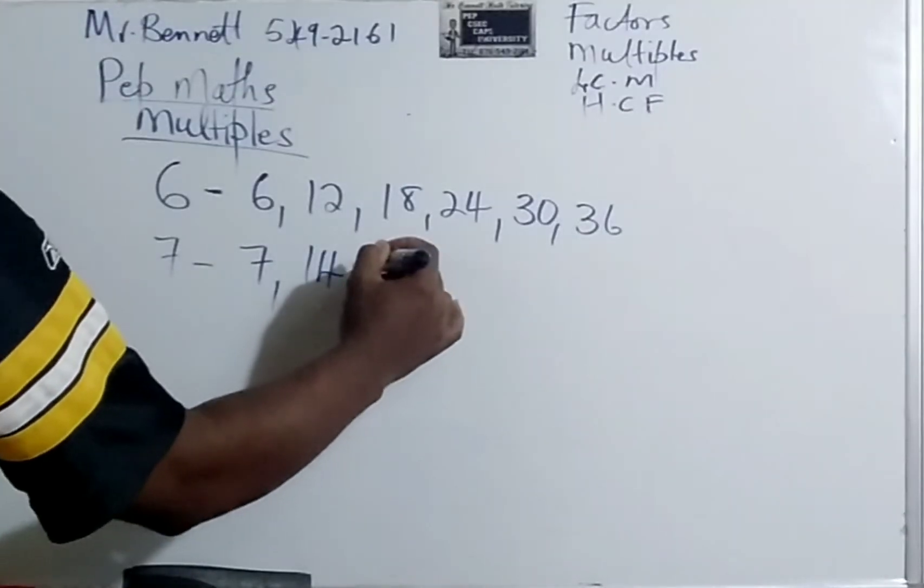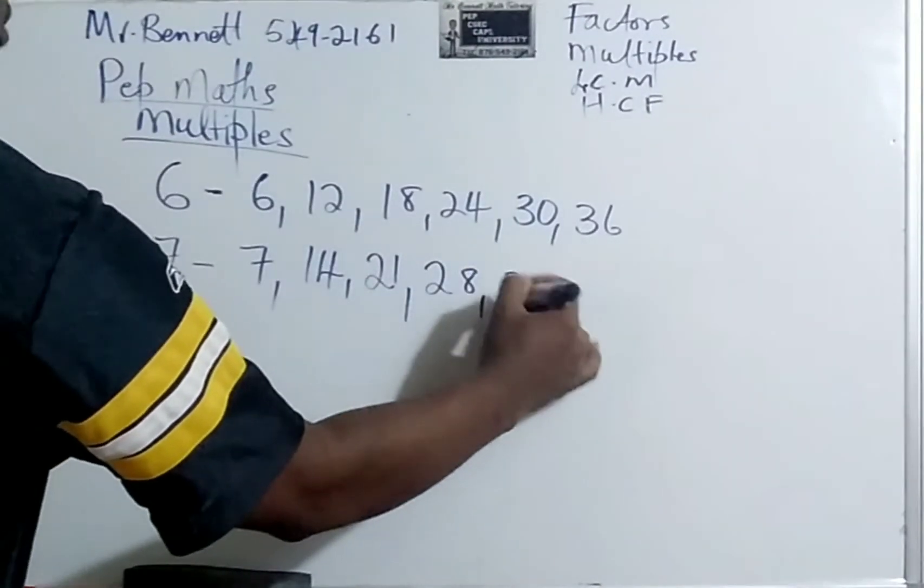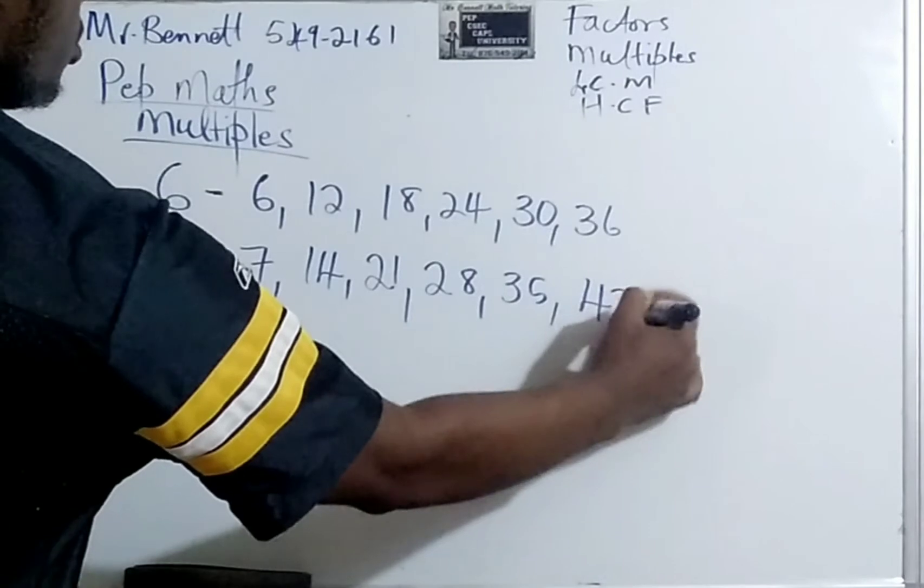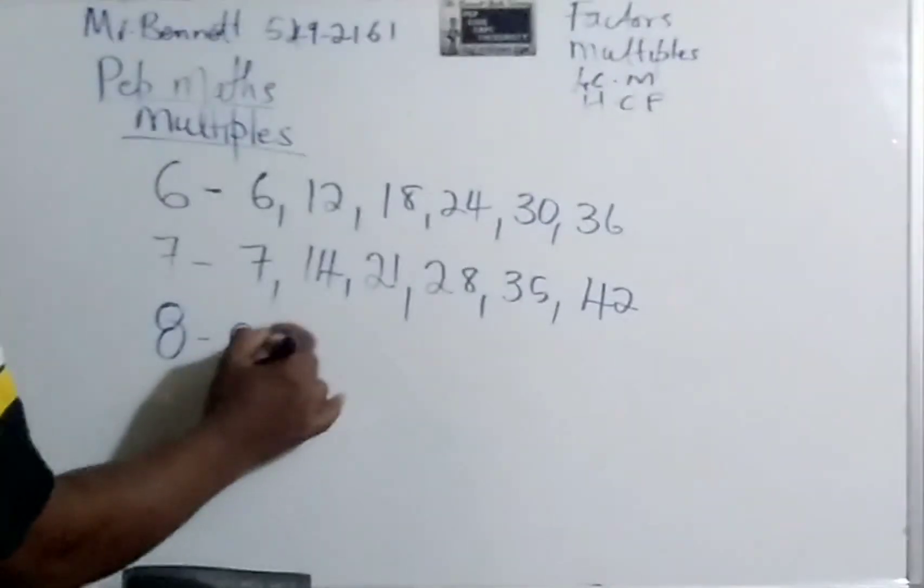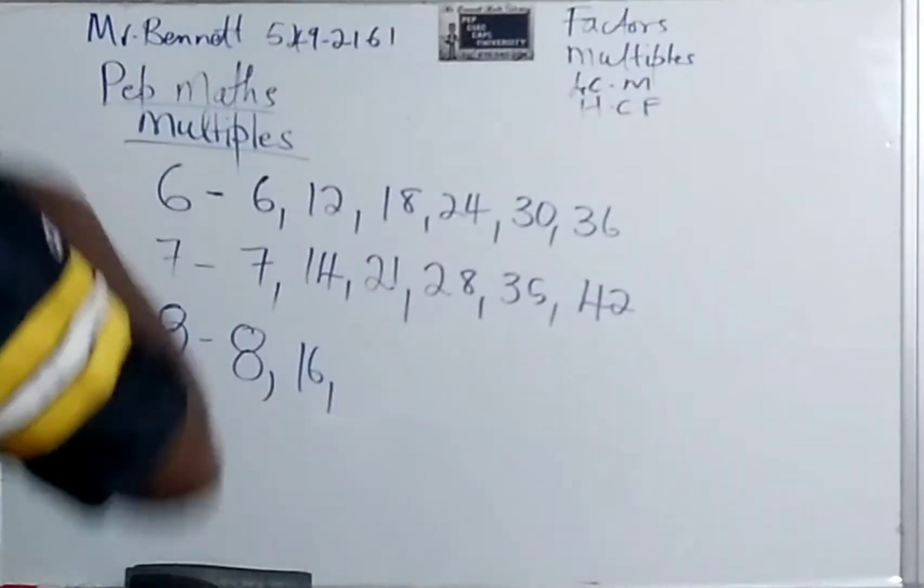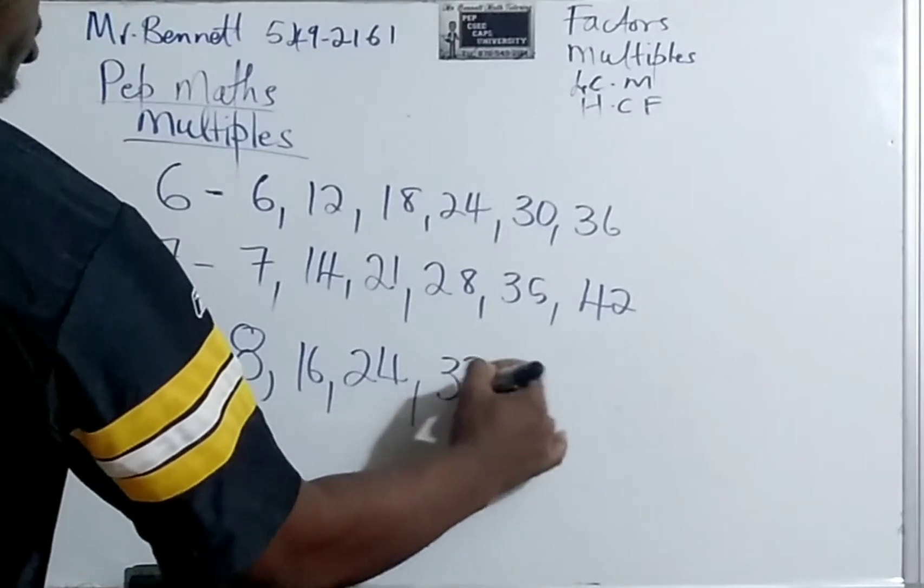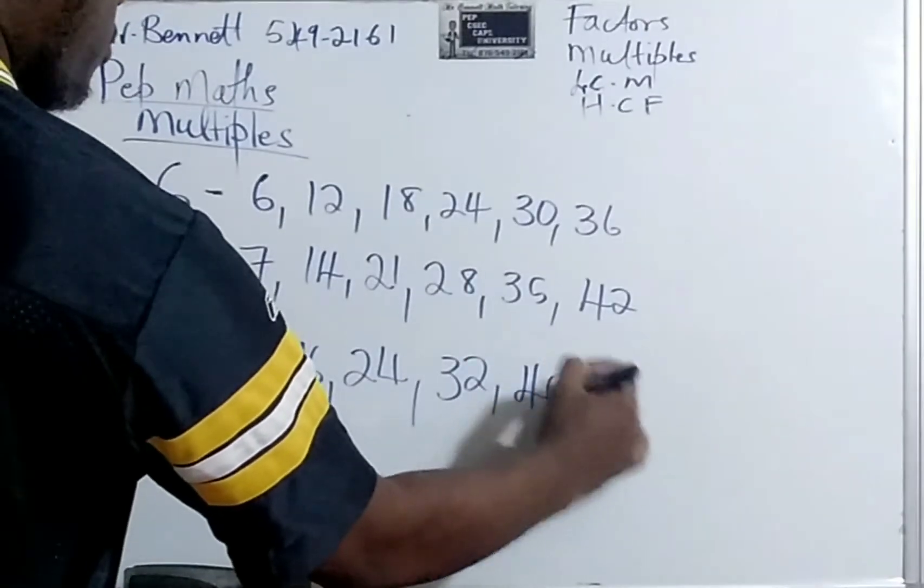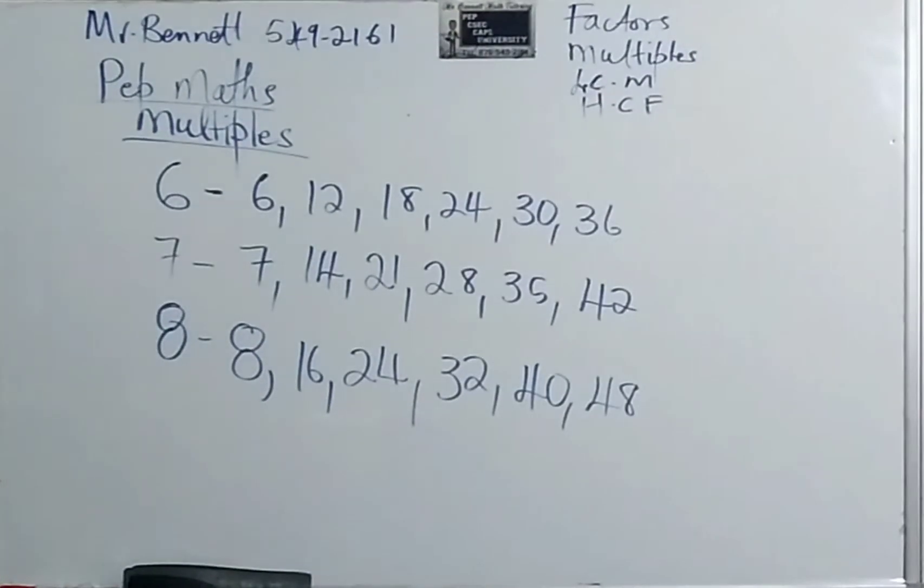Let us look at 7. 7 plus 7 is 14. Plus 7 would be 21. Plus 7 would be 28. 35. 42. I am sure you guys are getting the picture. Let us look at 8. 8 plus 8 would be 16. Plus 8 would be 24. Plus 8 would be 32. Plus 8 would be 40. If you add 8 to 40, you get 48 and so on.